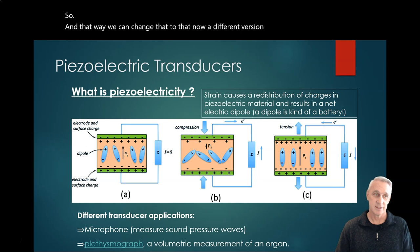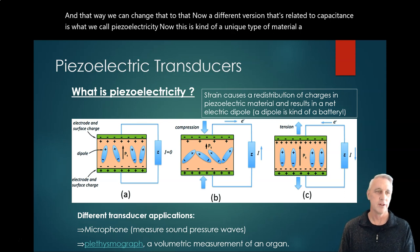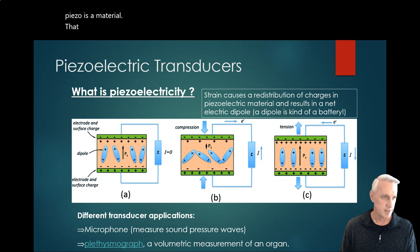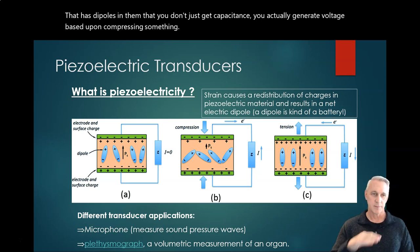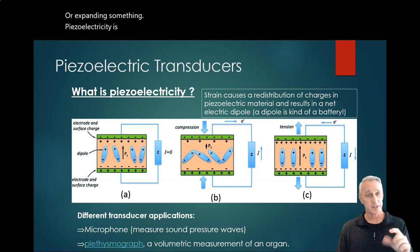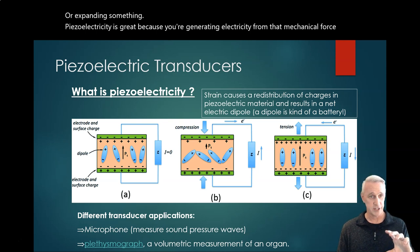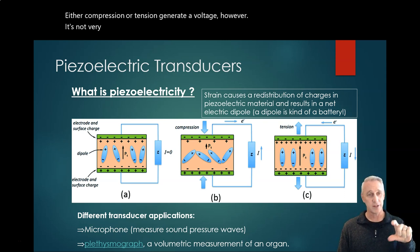Okay, so a different version that's related to capacitance is what we call piezoelectricity. Now this is a unique type of material. A piezo is a material that has dipoles in them, where you don't just get capacitance - you actually generate voltage based upon compressing something or expanding something. Piezoelectricity is great because you're generating electricity from that mechanical force, either compression or tension. You actually generate a voltage.